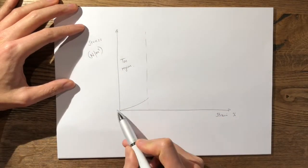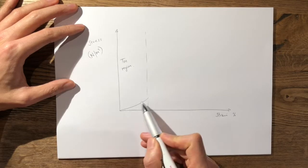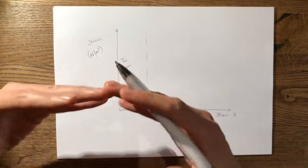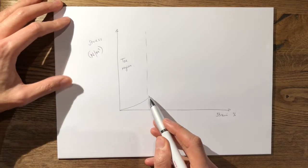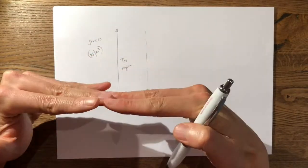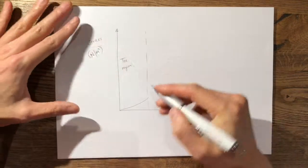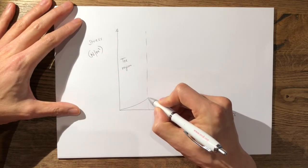It doesn't take a linear path because as the fibres uncrimp you gradually get an increase in strain. Once all the fibres have uncrimped then you get the linear portion of the curve.